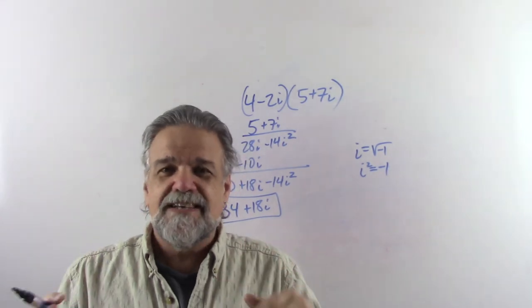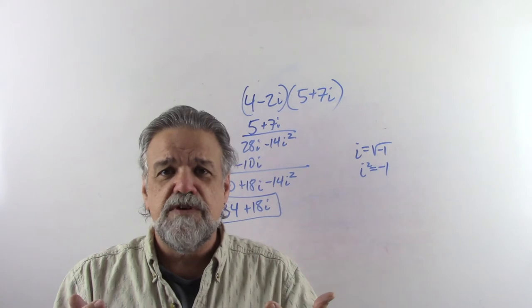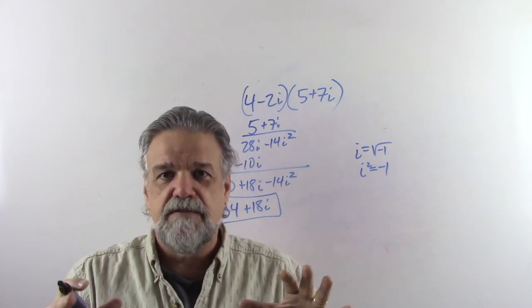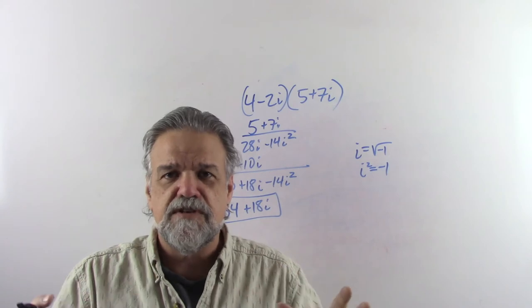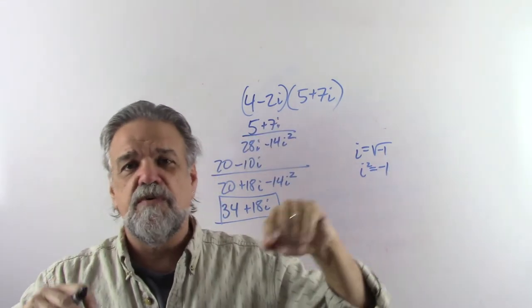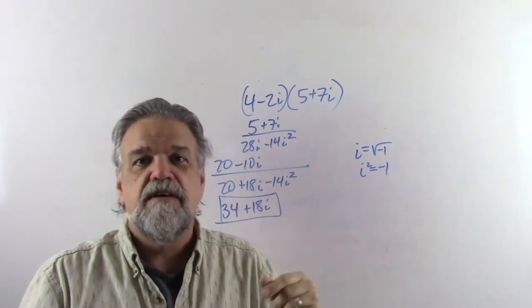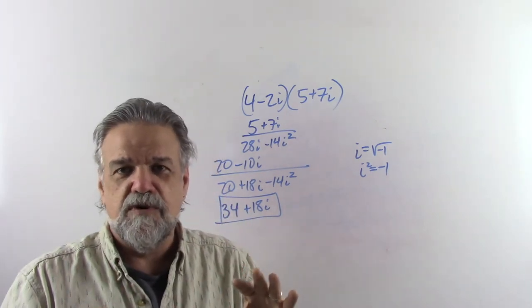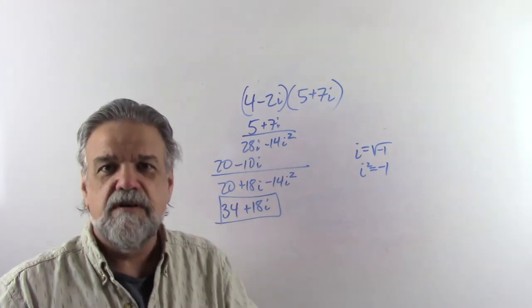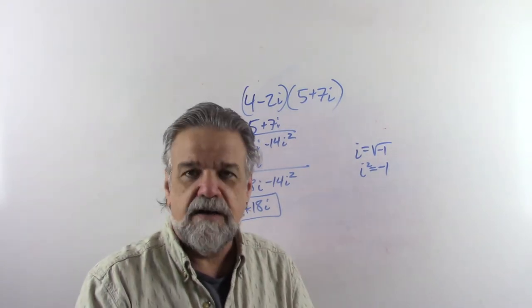Every complex number can be written as real part plus imaginary part. You might be thinking: why make such a big deal about this? Well, it's the convention mathematicians around the world have agreed on. Without a consistent convention, one person writes it one way and another writes it differently, and you can't tell if two numbers are equal. So everyone agrees this is the best way to write it.